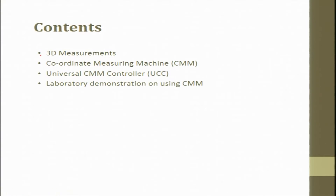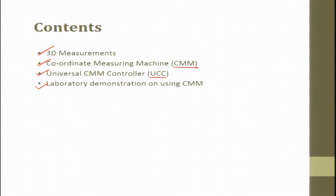Before the start of the lecture, I will tell you what 3D measurements are — we will recall those — then what is a coordinate measuring machine and the specifications of the particular machine we have in our lab. Then we have the UCC universal CMM controller, which is a kind of inbuilt component of the whole CMM machine. The controller that controls the machine is known as UCC. In the laboratory demonstration, we will show you the parts, the various heads, all the axes, the degrees of freedom, and we will try to measure one standard component.